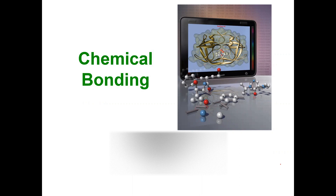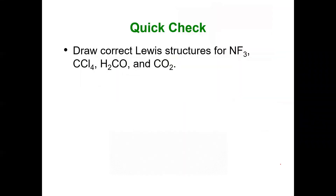Hi students. In this video we'll continue our discussion of chapter 10, chemical bonding, but we're going to apply a set of rules for more complicated Lewis structures. We've done some simple structures with ionic and covalent compounds using basic bonding patterns, but sometimes it gets trickier. I'm going to show you a set of rules I've developed to help keep you focused. This handout is on your Canvas website and you can apply these rules to even more complicated Lewis structures.